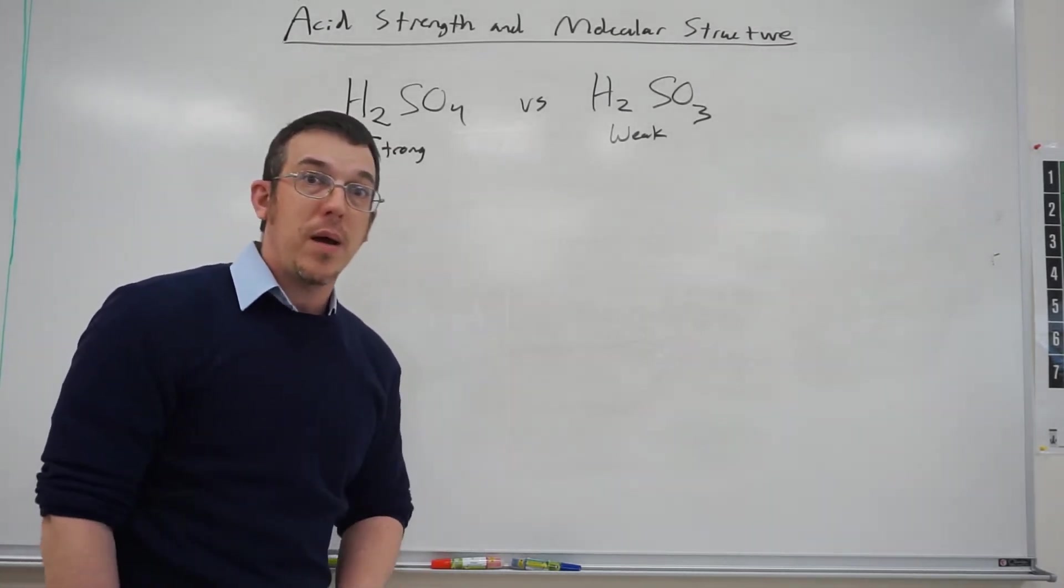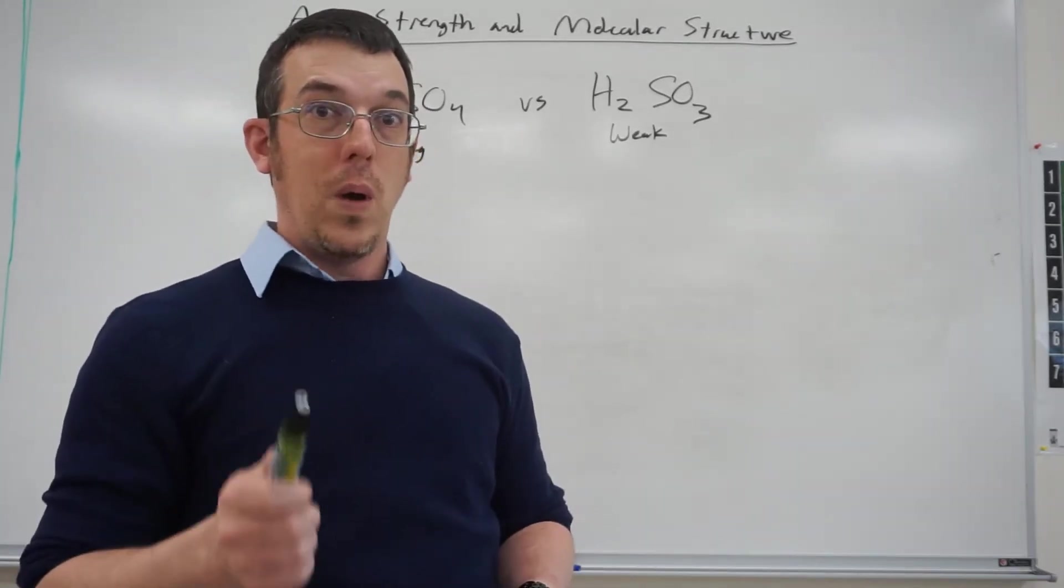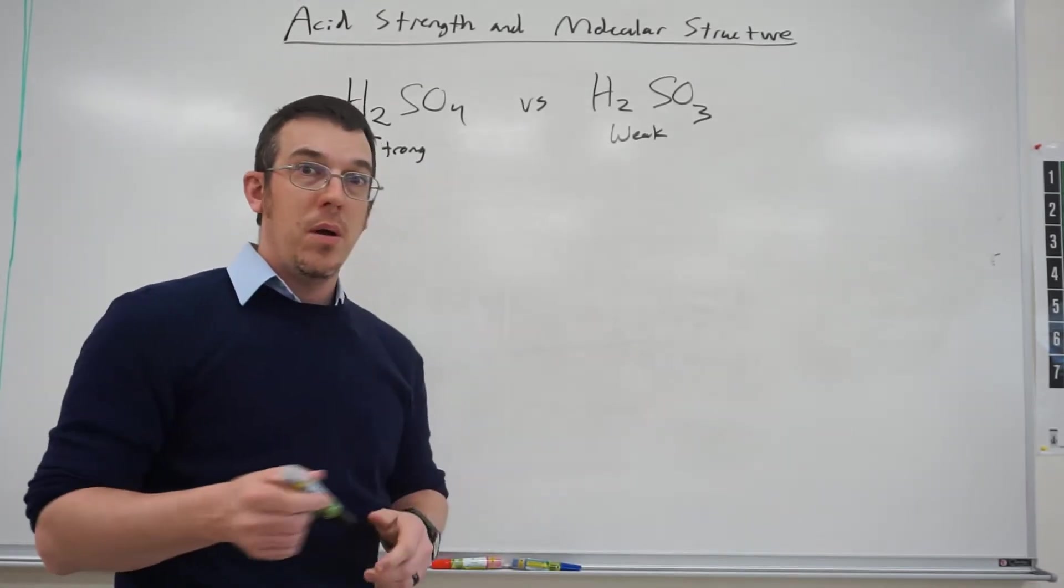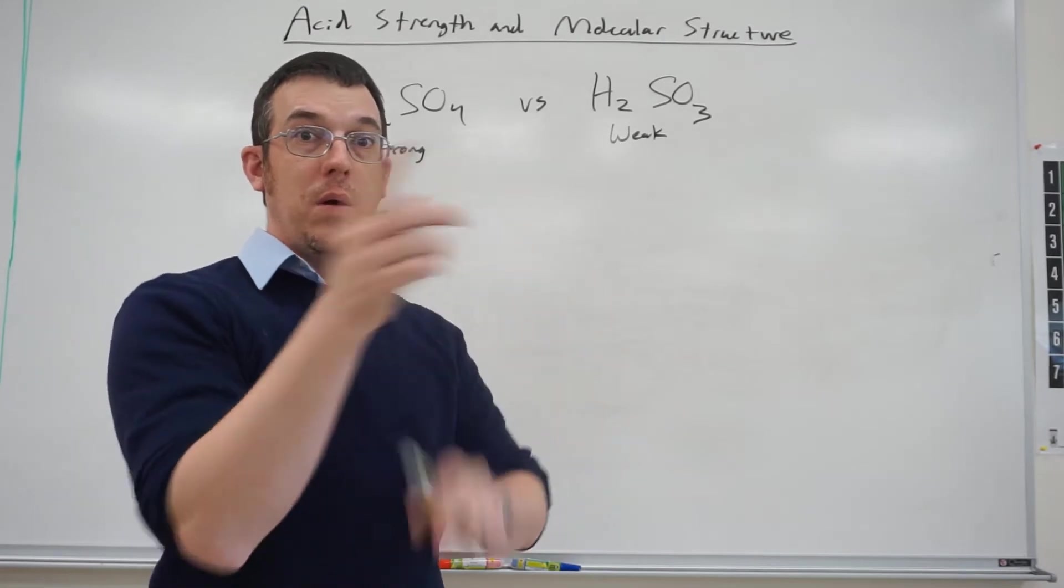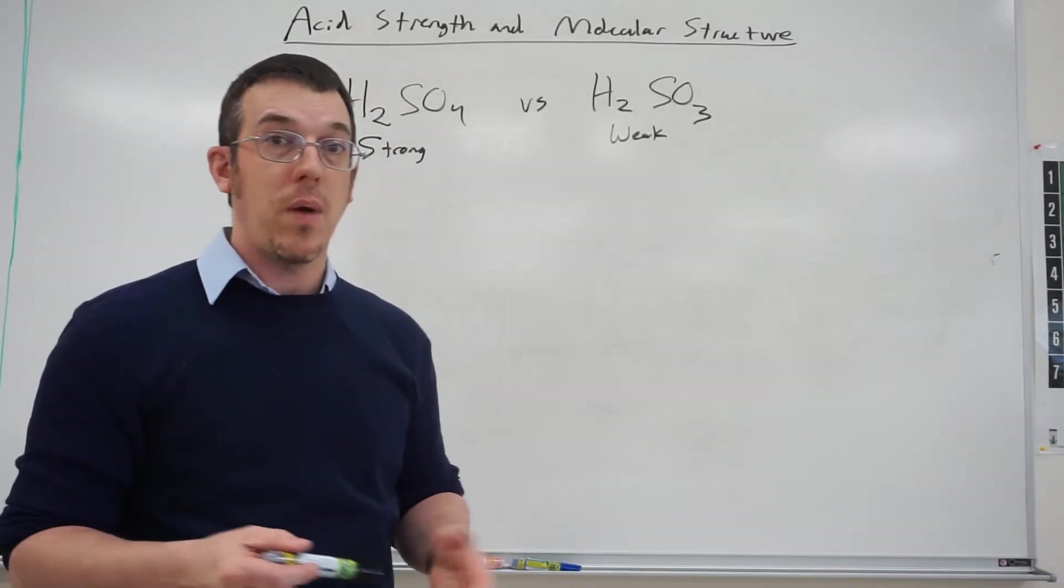Well all this stems back to what you learned in Chemistry 1, the Lewis structures. You remember the word resonance? What's that mean? Resonance is where you can have a rotation of electrons around the molecule. So a lot of times polyatomic ions are going to have resonance structures.